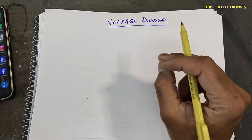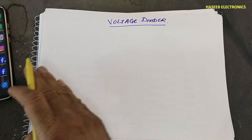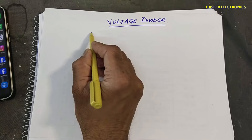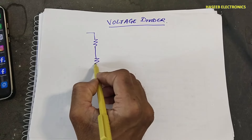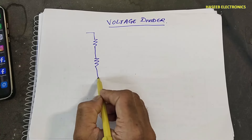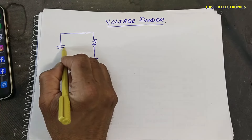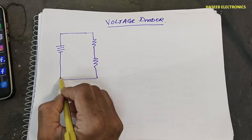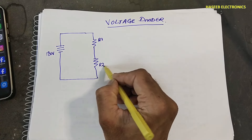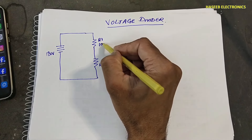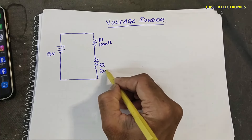I will suggest watching this video without skipping because each step is interlaced with the previous one. First, I will draw the same circuit — first resistor, second resistor, and here is a battery, 12 volts. This is R1 and this is R2. In our case, R1 is 1000 ohms and R2 is 2000 ohms.